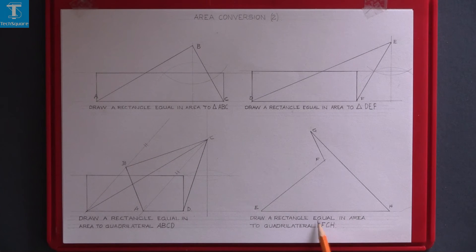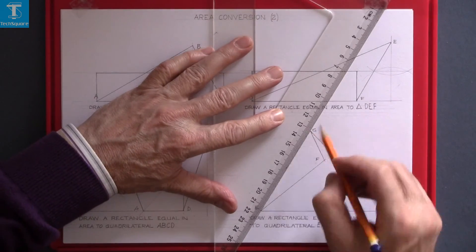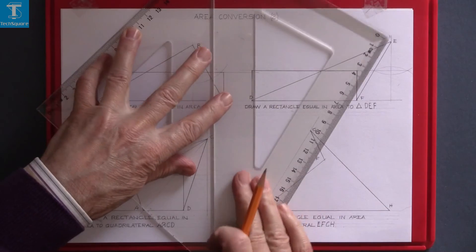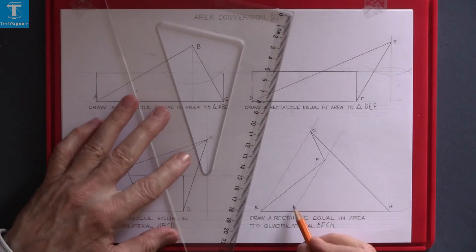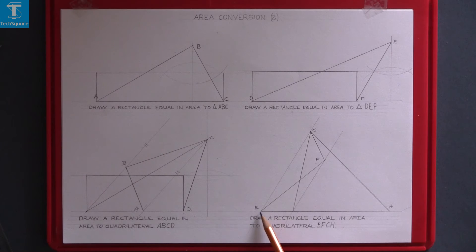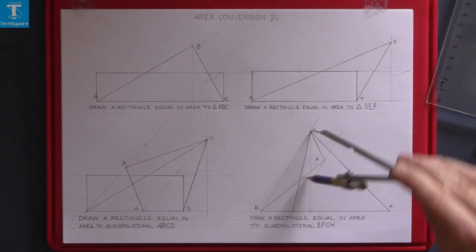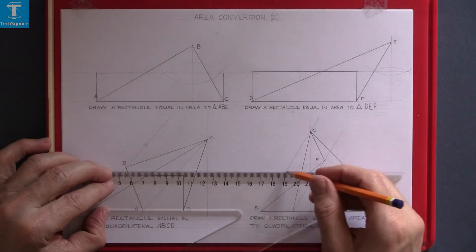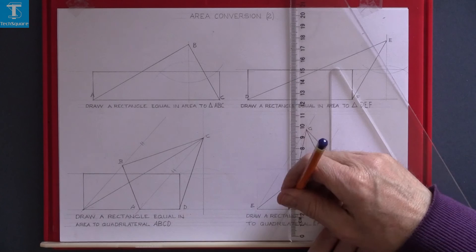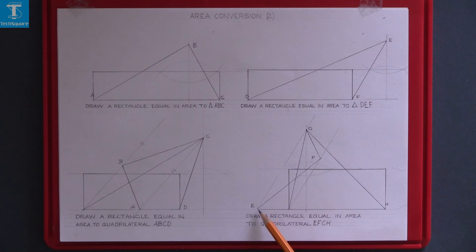Draw a rectangle equal in area to the quadrilateral EFGH. Bisect the perpendicular height, draw horizontally across, and draw up from the two points on the base. And that rectangle is equal in area to the quadrilateral EFGH.